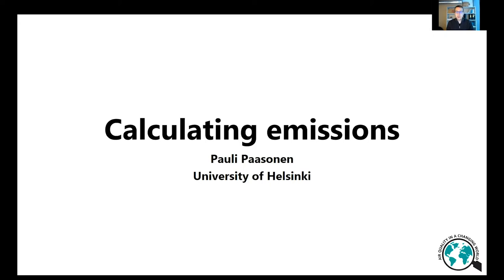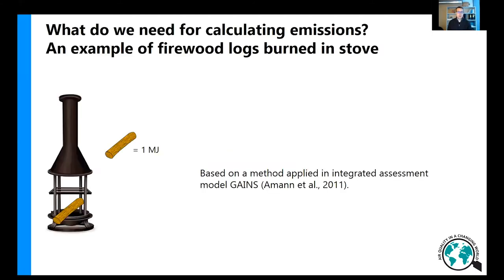Hello, let's continue with looking at an example of how we can calculate emissions. What do we need for calculating emissions? This is an example of firewood logs that are burned in a stove or fireplace. On the left you can see an image of a fireplace or a stove, where you have one log of wood. And now for the calculations, one log of wood here equals to one megajoule of energy in the wood. The calculation shown here is similar to what is applied in integrated assessment model GAINS, for which there's more information on the course website.